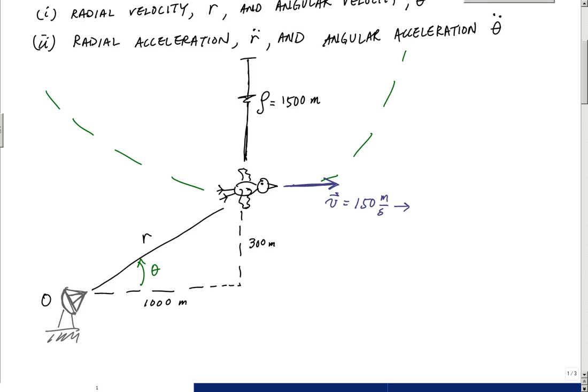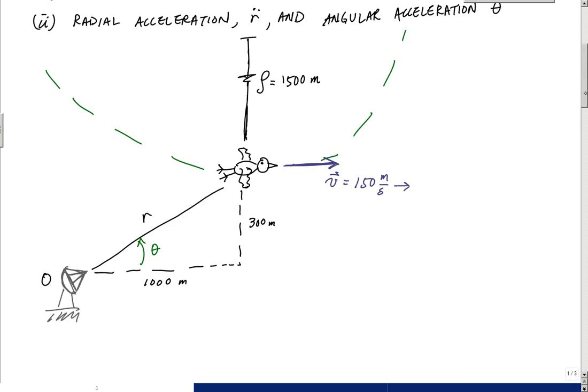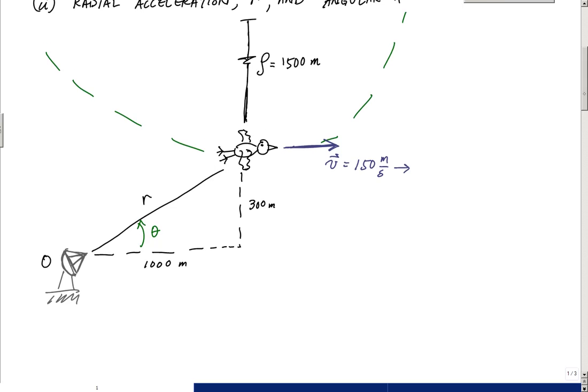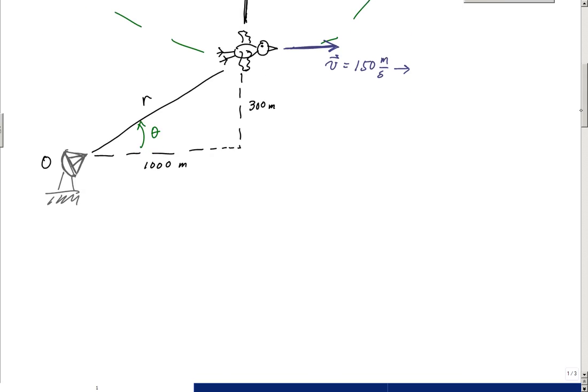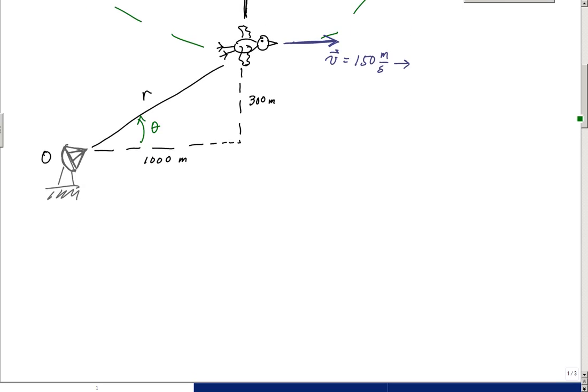And then we're going to establish an R theta directions, or positive R, positive transverse orientations. Calculate any important angles that probably look obvious here. And then just go and break it up into the R theta components and calculate based on definition. So here, let's go and do that. So the first thing we're going to do is establish the total velocity and acceleration. We're going to calculate A and V of the particle.